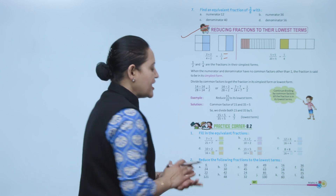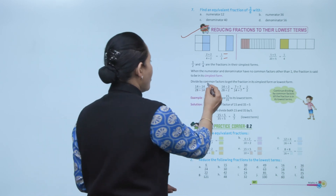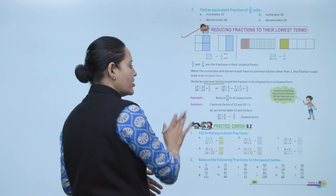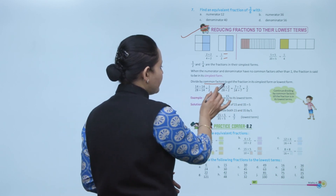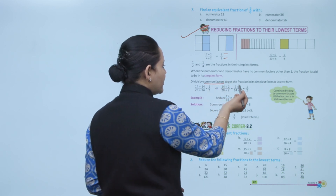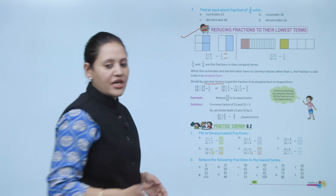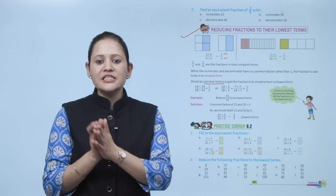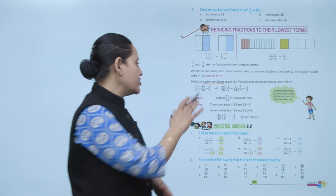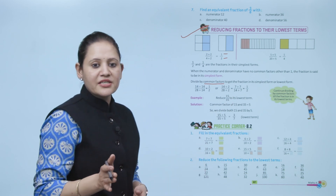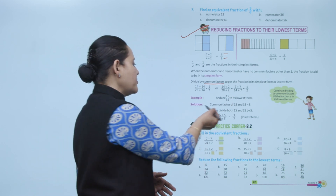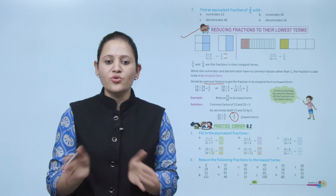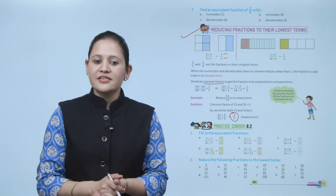For 14 upon 28, divide both by 14 to get 1 by 2 — that is its lowest form. Alternatively, divide by 2 first to get 7 upon 14, then divide by 7 to get 1 by 2. For example, reduce 15 upon 35 to its lowest form: the common factor of 15 and 35 is 5. Divide both by 5 to get 3 by 7. Since 3 and 7 have no common factor other than 1, they are in lowest terms. Next is practice corner 8.2.